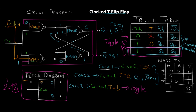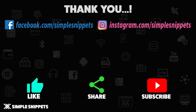The block diagram shows the T input, the clock input, and Q and Q-bar outputs — inside this box we have the entire circuit we just saw. The circuit diagram, truth table, and all the cases should now be clear. That's it for this video — if you liked it, give it a thumbs up, share it with your friends, and don't forget to subscribe to the channel.